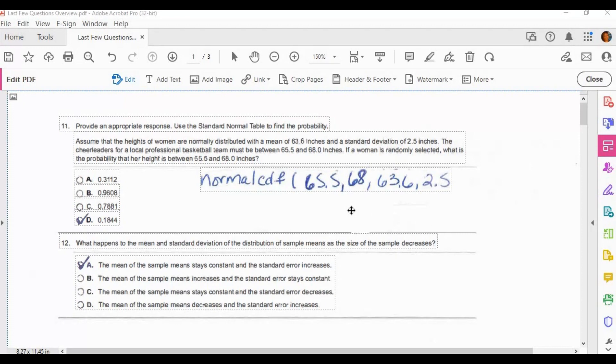Number 11 is pretty straightforward. It says, assume that the heights of women are normally distributed with a mean of 63.6 inches and a standard deviation of 2.5 inches. The cheerleaders for a local professional basketball team must be between 65.5 and 68 inches. If a woman is randomly selected, what is the probability that her height is between 65.5 and 68? Because of the information they gave us and they said to use a standard normal table to find the probability, that means we can use the normal CDF to solve this problem.